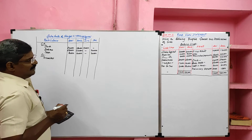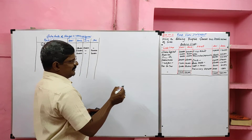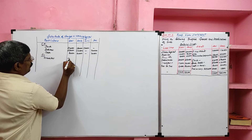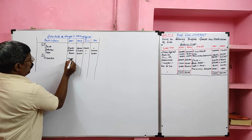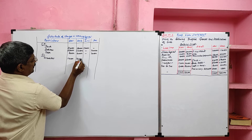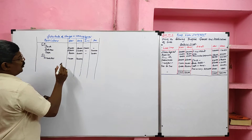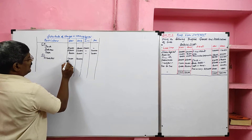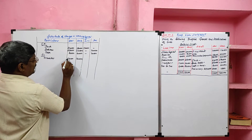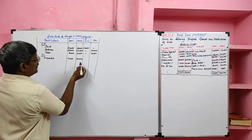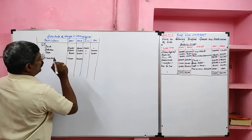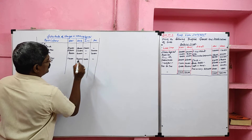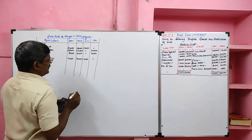Now we take current liabilities. The only current liability is creditors. From the liability side: opening balance 1,70,000, closing balance 1,60,000. Creditors is a current liability. When a current liability decreases, it increases our working capital by 10,000.